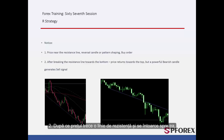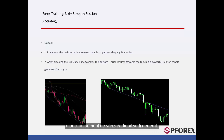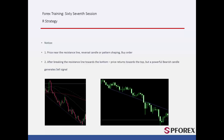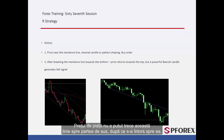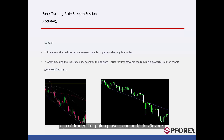After price passes a resistance line and returns towards it, if a powerful bearish candle forms on the resistance line, then a reliable sell signal will be generated. On the right graph, market price has passed the resistance line. Market price could not pass this line towards the top after the price returned towards it. An engulfing candle has formed on this resistance line; thus a trader could place a sell order.